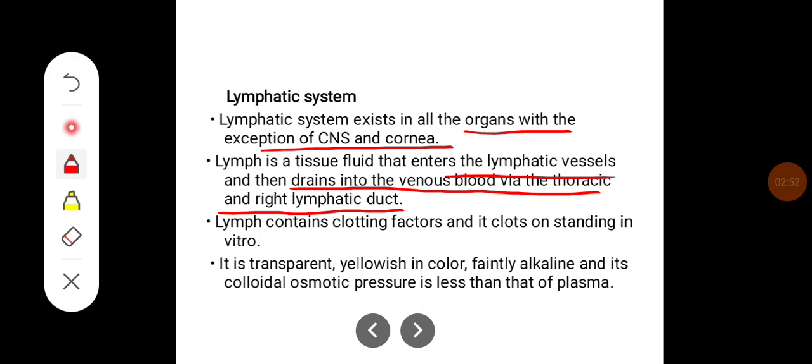Lymph contains clotting factors and it clots on standing in vitro. It is transparent, yellowish in color, faintly alkaline and its colloidal osmotic pressure is less than that of plasma.